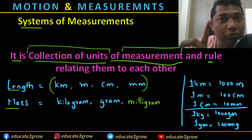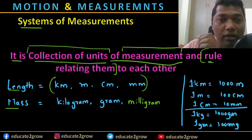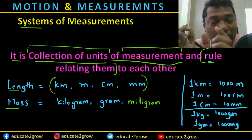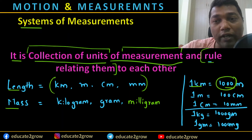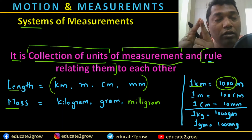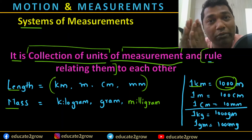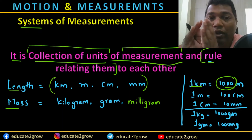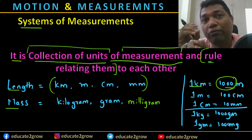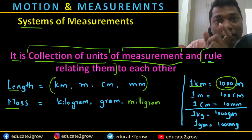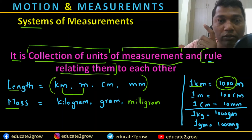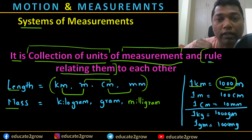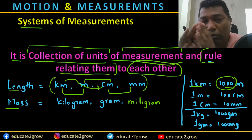The system of measurement has an internal rule connecting these units. For example, one kilometer equals 1000 meters — that is a conversion factor. Similarly, there are conversion factors connecting meter to centimeter, and kilometer to millimeter. So they have a conversion factor, and that conversion factor is the rule relating them to each other.